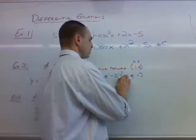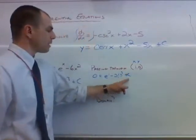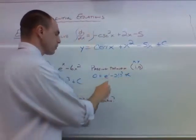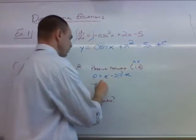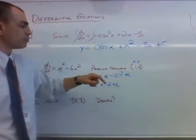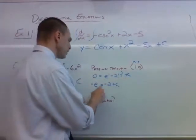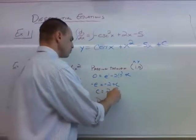Oops, sorry, we have our plus c. Let's try this again. Plus c, there we go. All right, so now we want to get c all by itself, so we'll subtract e from both sides. So we know that negative 2 times 1 cubed is negative 2. Add 2 to both sides, and c is equal to 2 minus e.